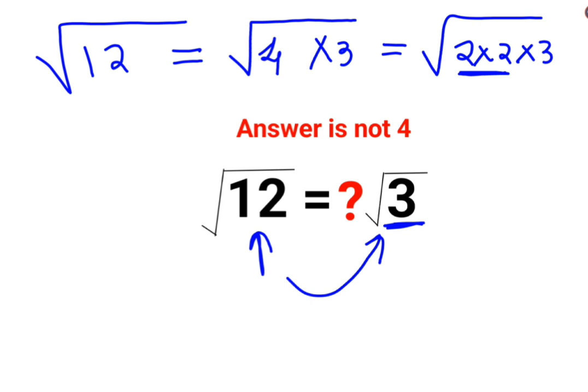Out of this root, we can take this 2 outside and write it as 2. We will continue to write the 3 as it is in the root because 3 is alone and doesn't have anything matching.